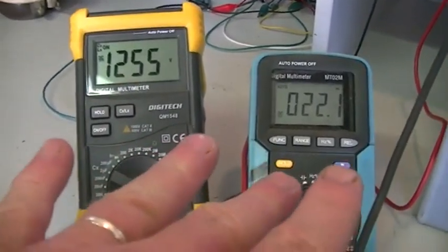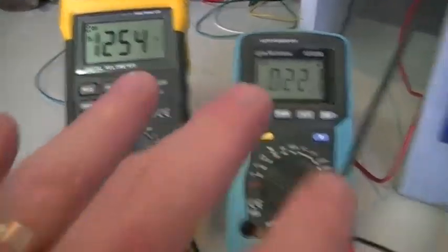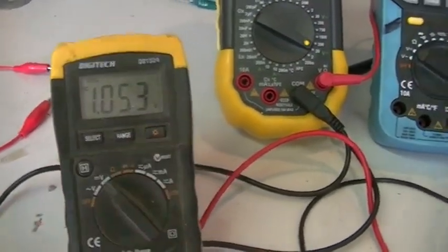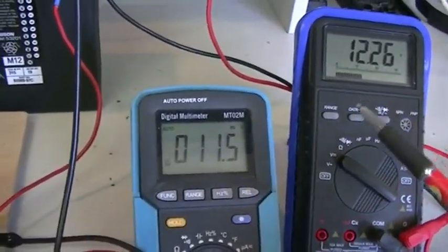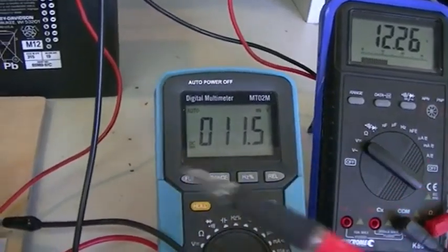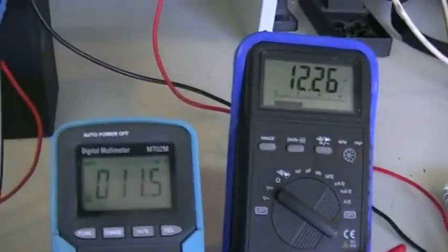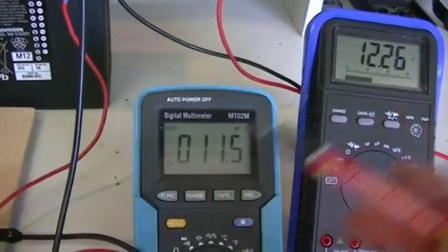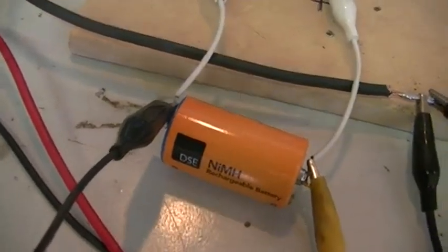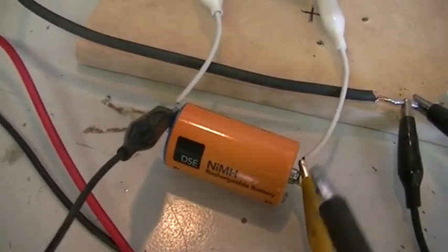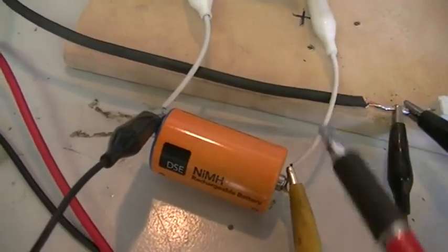So whilst we reduced our power in with our counter EMF and we are charging the battery slightly, we went down in our power out also by marginally more than the power in decreased. What's actually happening there is that power hasn't actually gone missing.